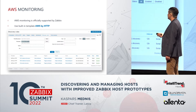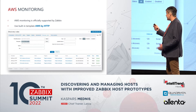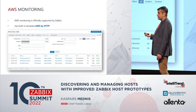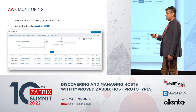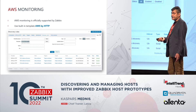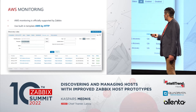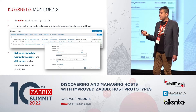The same is implemented for AWS. There is a template called 'AWS by HTTP' — you monitor your instance and here are the prototypes: prototypes for EC2 instances, prototypes for remote database, and more. It's very simple — one template, one host, and everything will be monitored automatically. If you need, you can customize something.